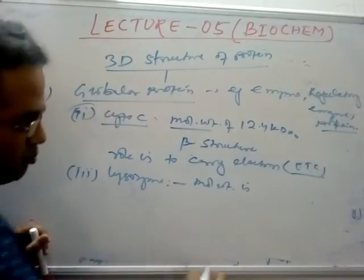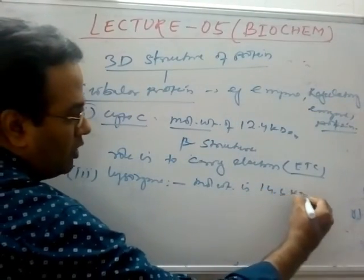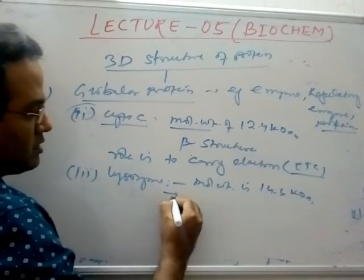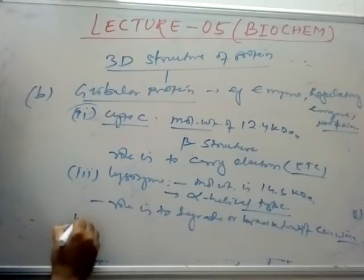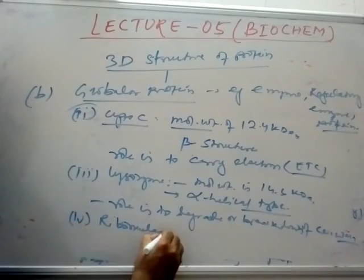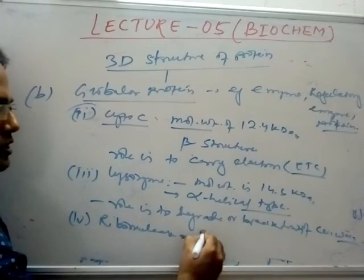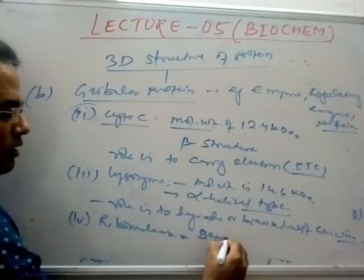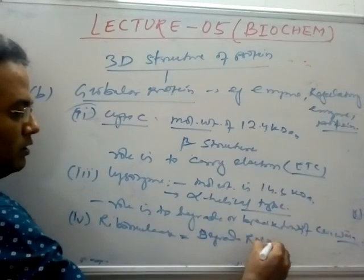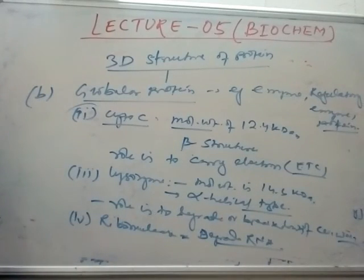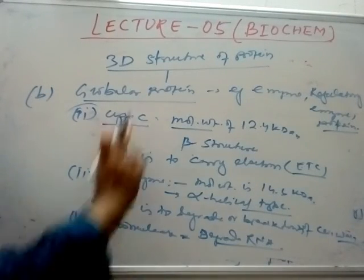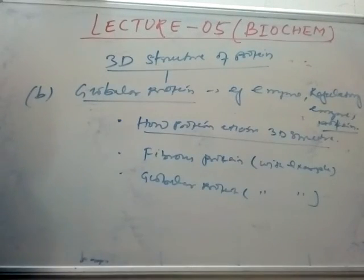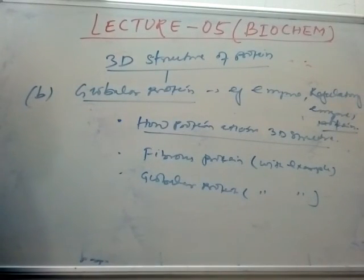The third example in this category is lysozyme, with a molecular weight of 14.6 kilodaltons. It functions as a ribonuclease, which degrades RNA. These are the four examples you have to study about globular proteins. Please share this video with your friends, subscribe to my Science Academy YouTube channel, and like and comment in the comment section. Thanks for watching.